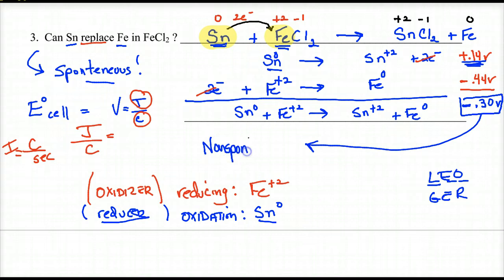That means the reaction is not going to work in this direction under these current set of conditions. So it doesn't work. So can tin replace iron? And the answer is no, it cannot. That is our answer because we got negative voltages, which tell us the reaction doesn't go in that direction.